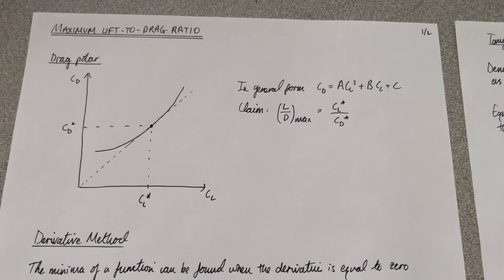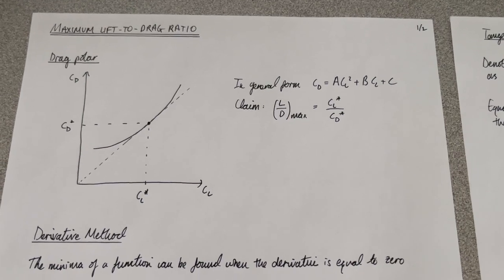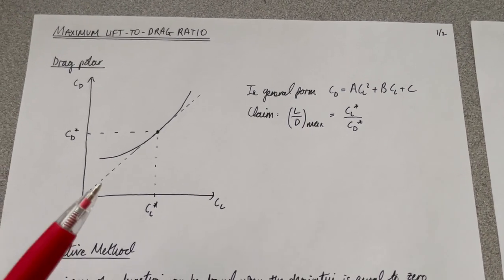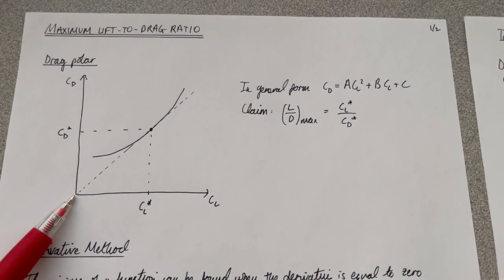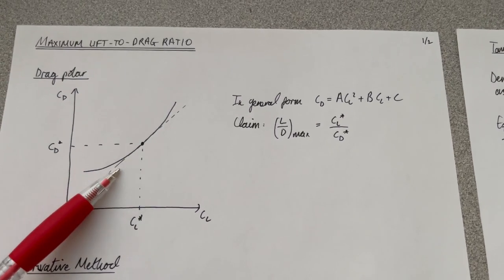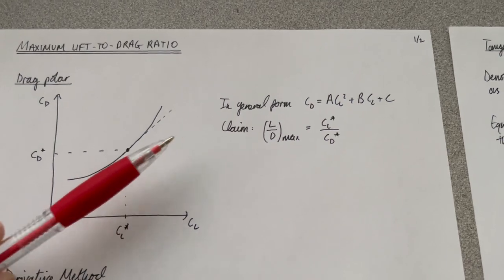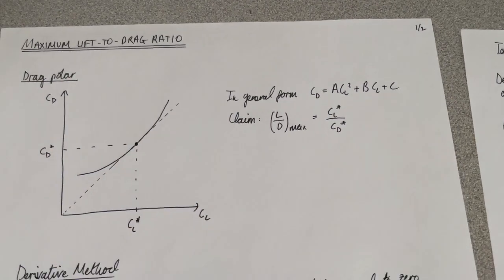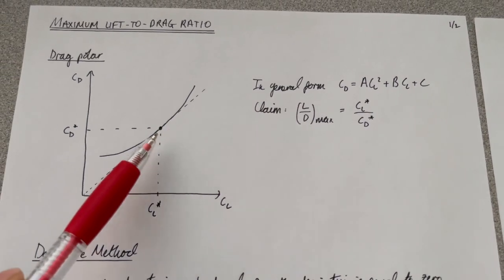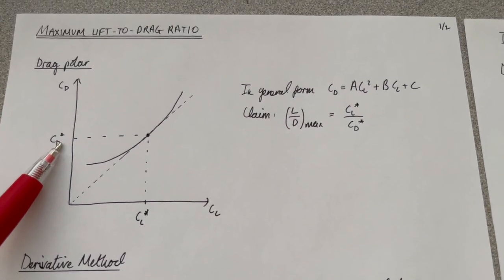The derivative method involves finding the minima of a function and setting that equal to zero and solving. I'm also claiming that if you draw a tangent to the drag polar curve through the origin, the point at which that tangent line first touches the drag polar from below is the point corresponding to maximum lift-to-drag ratio.